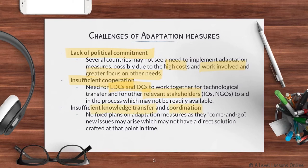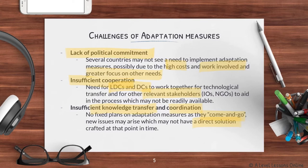Lastly, there is insufficient knowledge transfer and coordination. There are no fixed plans for adaptation measures as new issues may arise without direct solutions. Adaptation really looks at what effect has already happened as a result of climate change at that point in time and tries to create a new solution. Different effects of climate change warrant different types of strategies, so there is a lot of planning involved, including significant time to decide what kind of adaptation measures to implement.